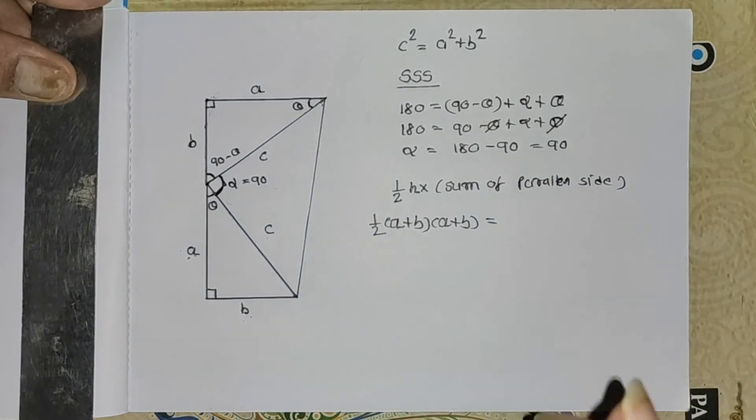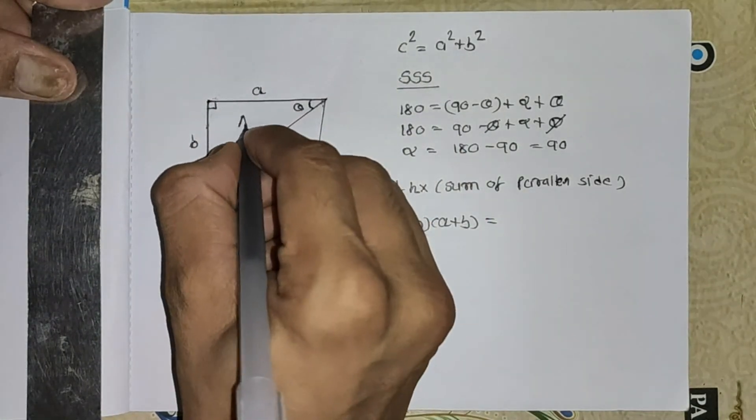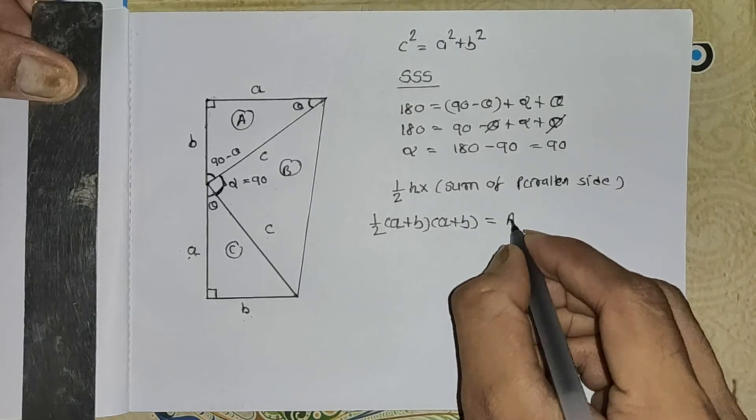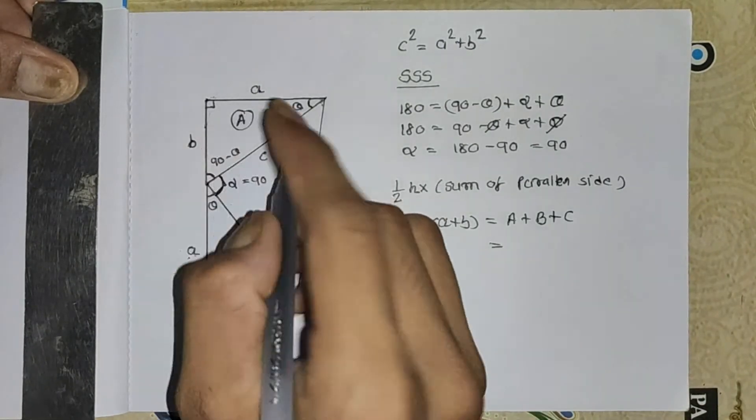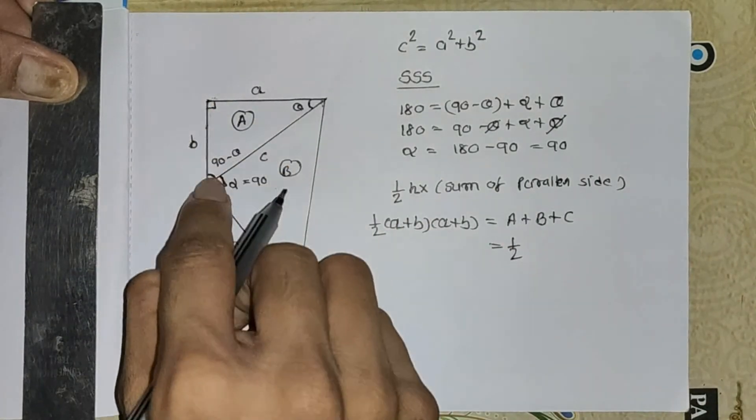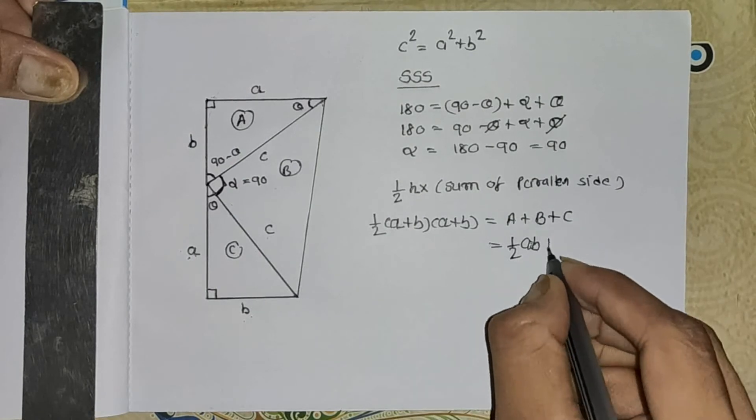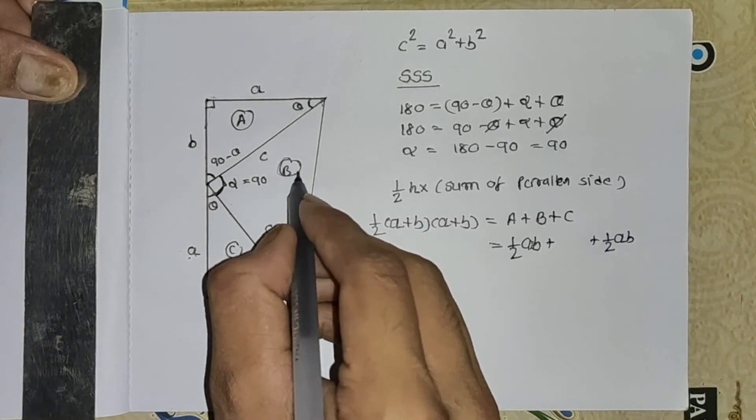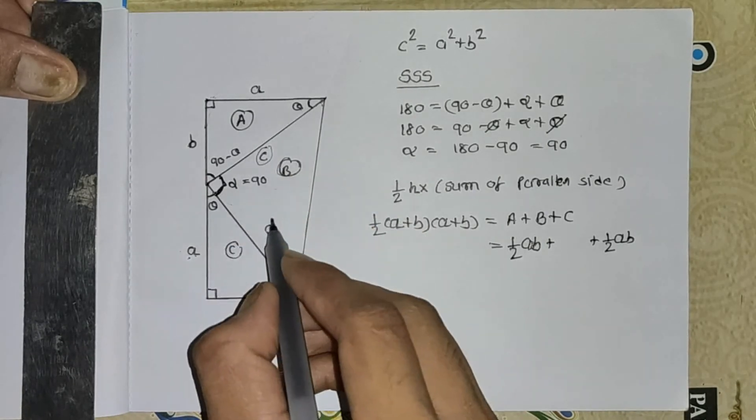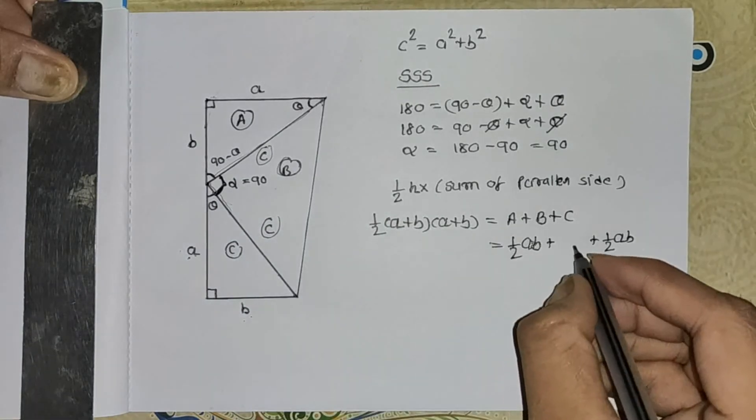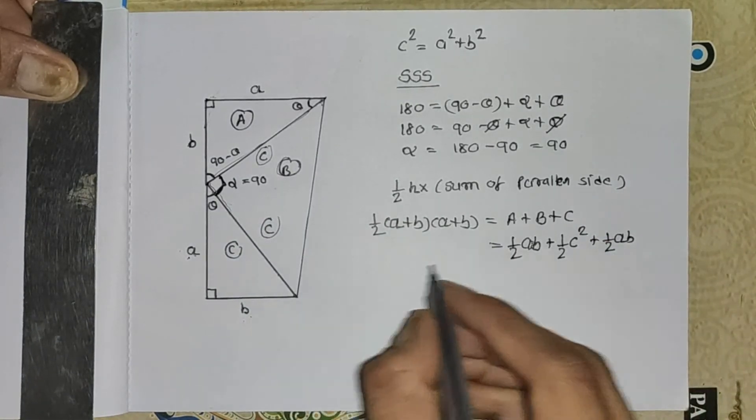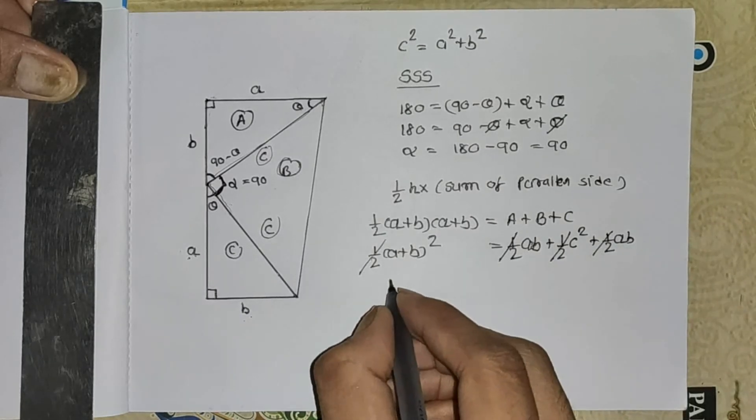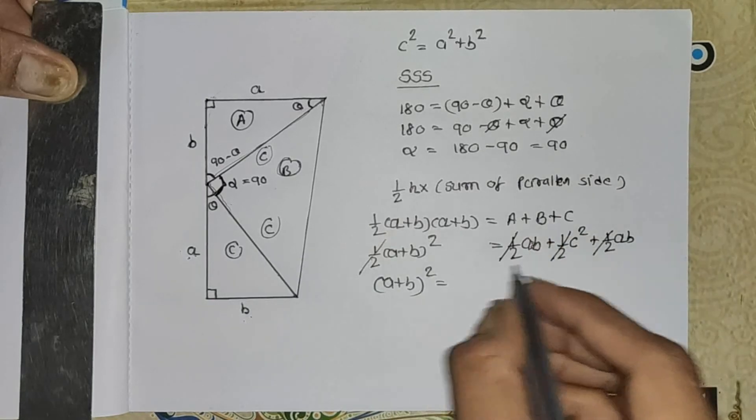Area of trapezoid, we know another equation. Area of trapezoid equals area of the triangles. Area of this triangle equals one half base into height, a into b. The same for the other triangles. So area of trapezoid equals the sum of the triangle areas.